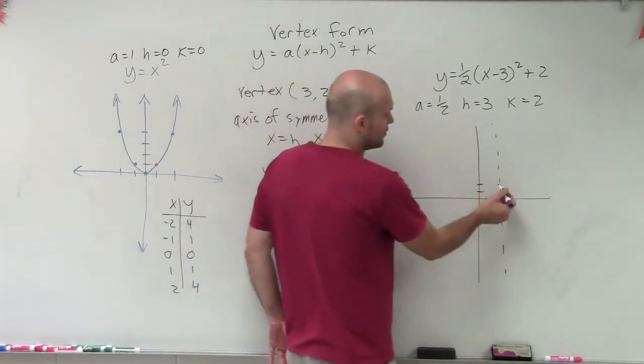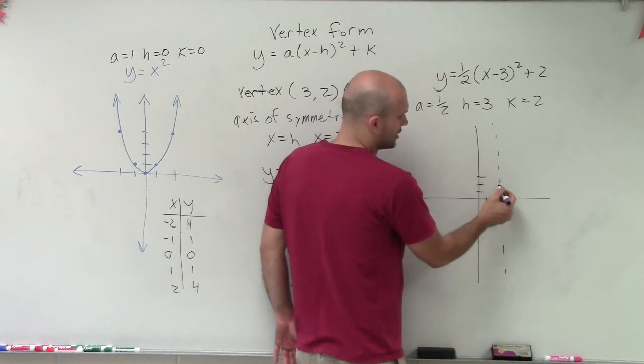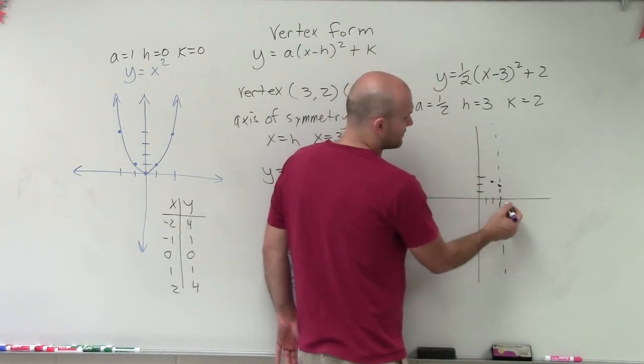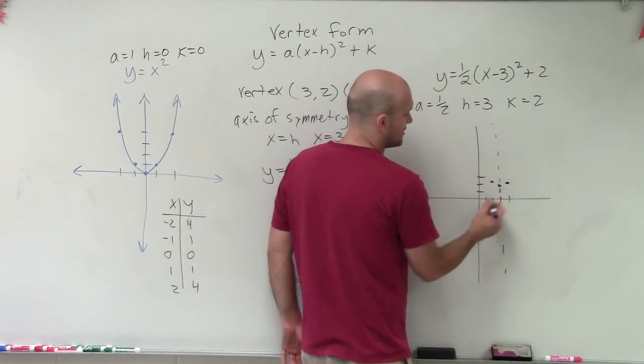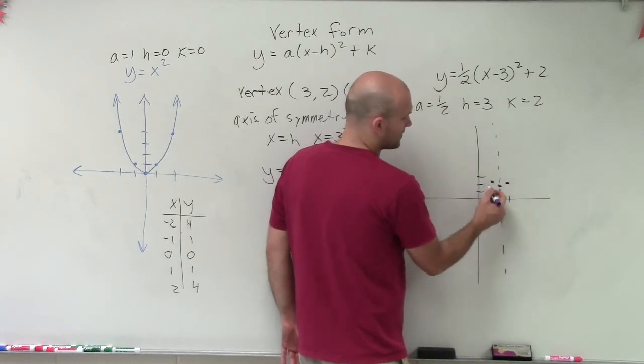So when I look at this graph, since I'm still opening upwards, instead of going over 1, up 1, I'm now going to go over 1, up 1/2. And that's going to be true in the positive direction as well. Over 1, up 1/2.